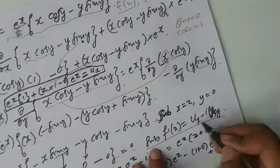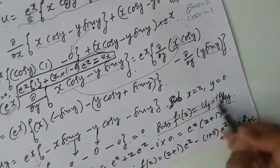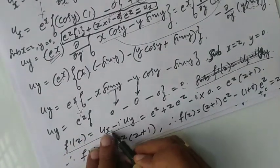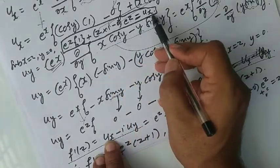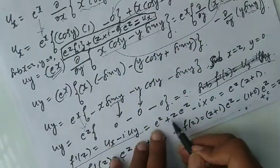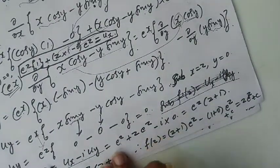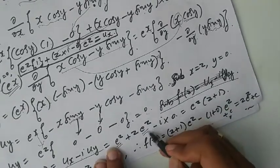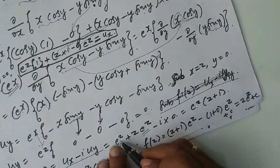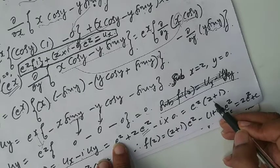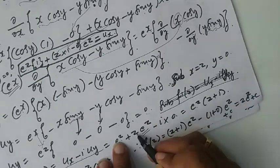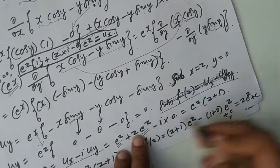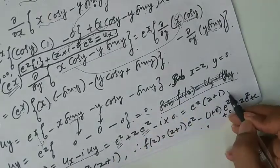Now let us substitute into the formula. f'(z) is equal to ux minus i times uy. What is ux? The result we got: e to the power z plus z into e to the power z. Minus i times uy, and uy is 0. Taking e to the power z as the common factor, f'(z) equals e to the power z into (z plus 1).